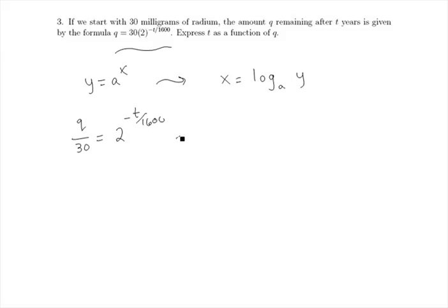Now we're going to write this in terms of a log. Starting with the power, the power is negative t over 1600. That's going to equal the log base 2 of q over 30.